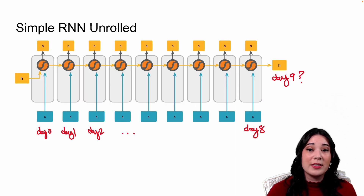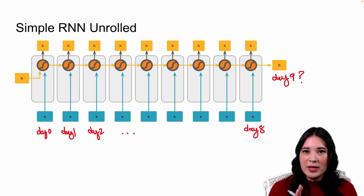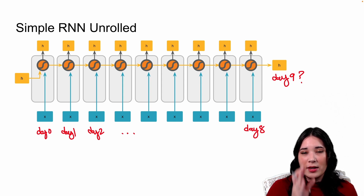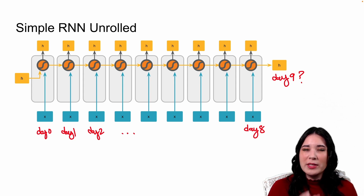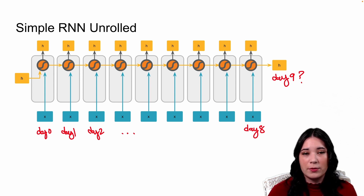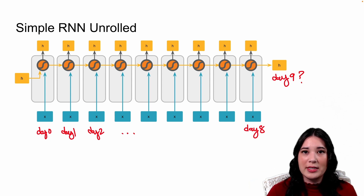To review: recurrent architectures are very special because they allow us to take into account sequential relationships in our data. They form a node that takes in an input and a previous output and combines them to make a new prediction. Thus, when we have a sequence of data, we feed it through this same node over and over, always taking the output of the previous time step and feeding it back in. This architecture is especially helpful for forecasting — predicting the next day's stock price, your heart rate in 10 minutes, or the next word in a sentence.